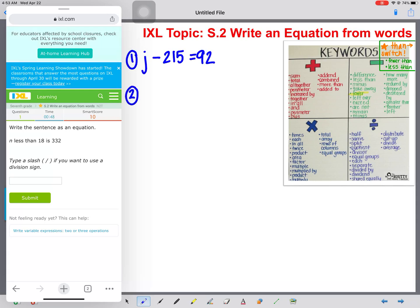Let's look at number two. N less than 18 is 332. Okay, here is one of those keyword that's a flip word. Okay, we're going to have to remember when we write this that it's going to switch the order. So instead of N less than 18, that's going to be written as 18 minus N equal to 332.